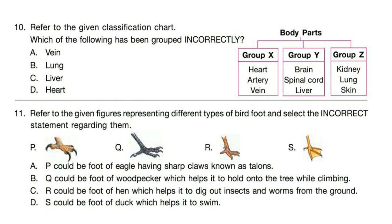Question 11: Refer to the given figures representing different types of bird feet and select the incorrect statement regarding them. Read the options carefully and try to find out which one is incorrect. Correct answer is option B. Q could be the foot of a woodpecker which helps it hold onto the tree while climbing — this is incorrect.